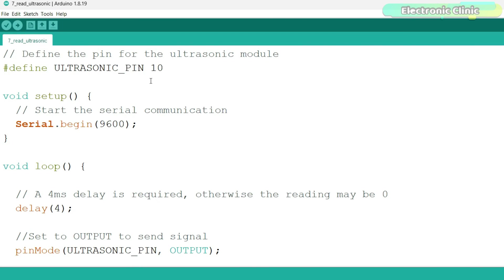First, define a pin for the ultrasonic sensor. As I said, the ultrasonic sensor is connected to Arduino Pin 10. In the setup function, we simply activated the serial communication and we are using 9600 as a baud rate.